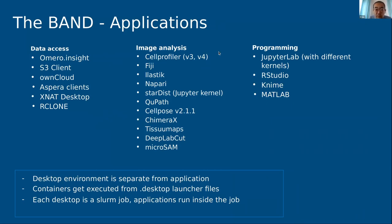The applications currently available on the platform are organized in three categories. Each application is a Singularity container built by an admin — you can start them from your BAND desktop via the standard menu. The desktop environment is directly installed on the compute node, not part of the container. So if you have your own container, you can bring it and make it available without worrying about X11 dependencies or graphical dependencies. Each desktop is a standard Slurm VNC job.